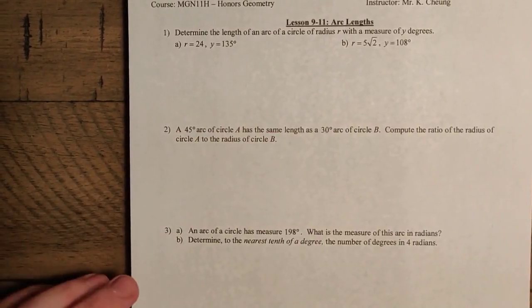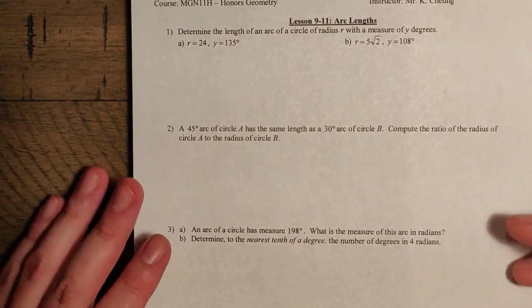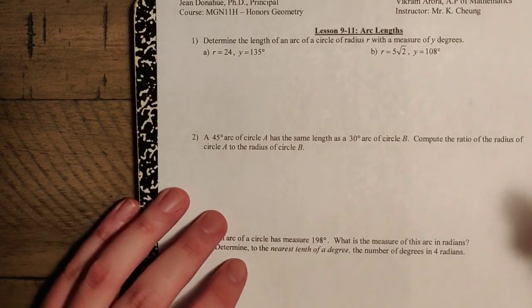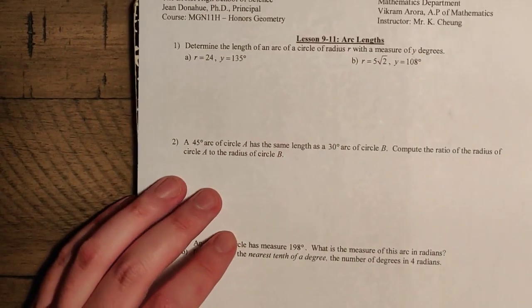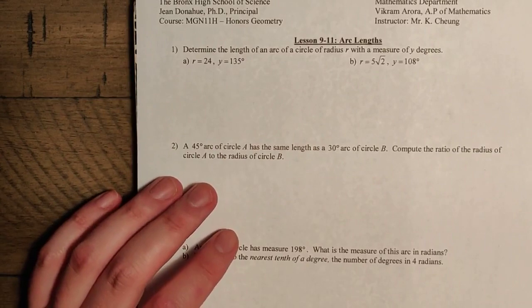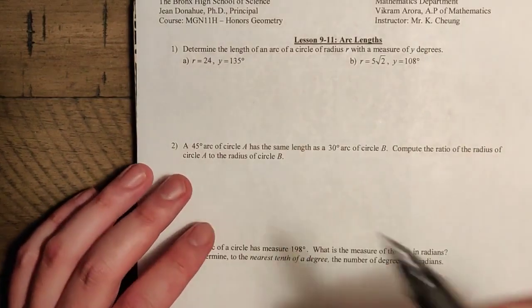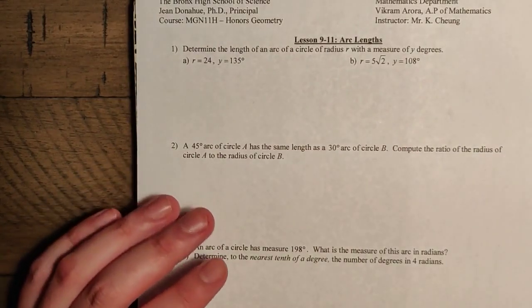Hi, everybody. It's now time for us to take a look at the first two problems on this handout here. We're going to do that as sort of a review. So in this case, the first problem tells us to determine the length of an arc of a circle of radius r with a measure of y degrees. So in this case, we have r is 24, y is 135.